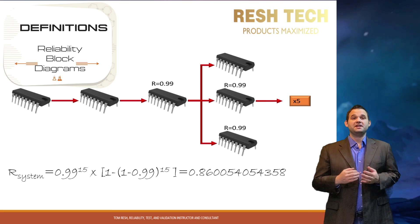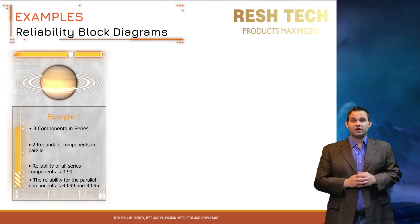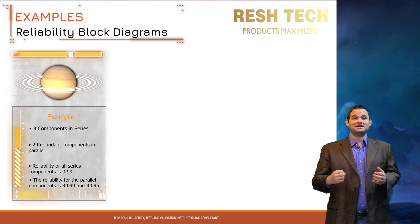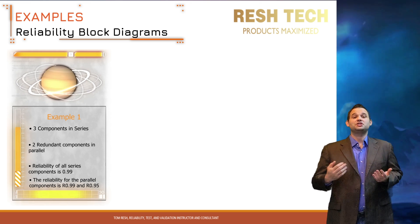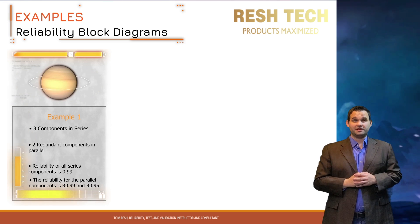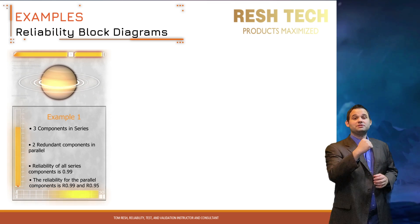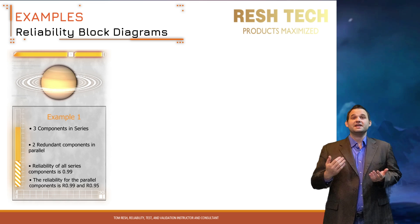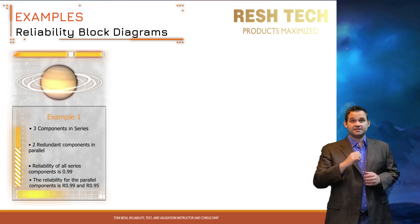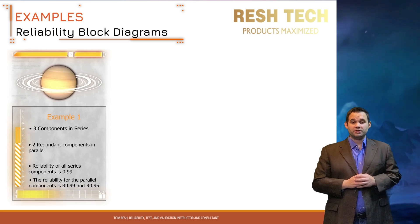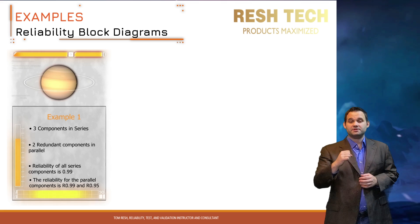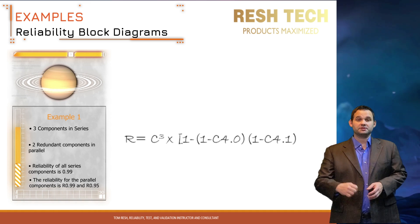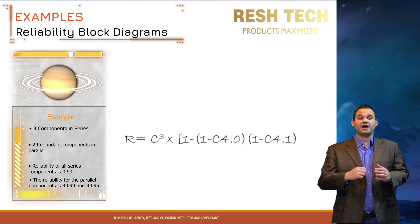If you like to visualize stuff in a simple-to-read format, the reliability block diagram is the way to go. Let's show the power of reliability block diagrams in more detail through examples. Pictured is an example of a system with three components in series and two components in parallel. Each component has a reliability value, and the two parallel components are redundant — meaning one can compensate for the functions of a neighboring failed component.